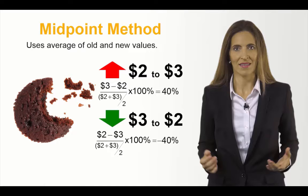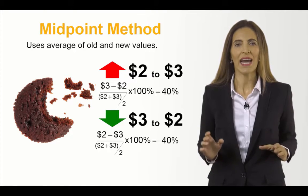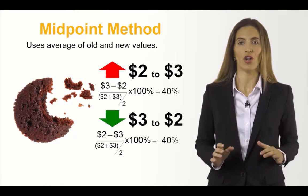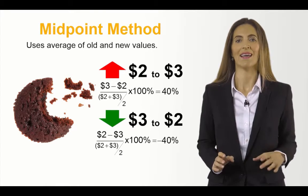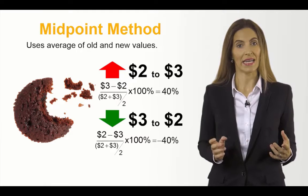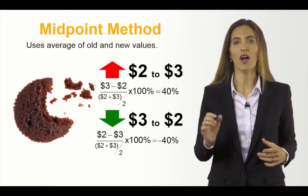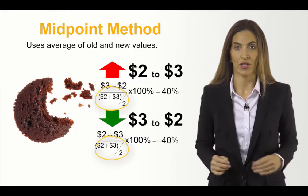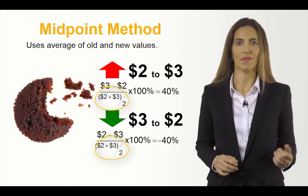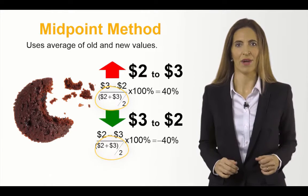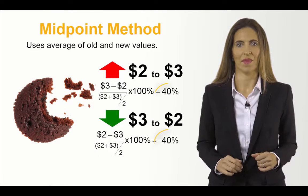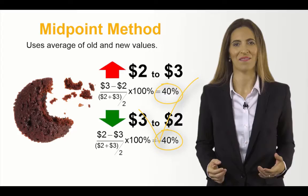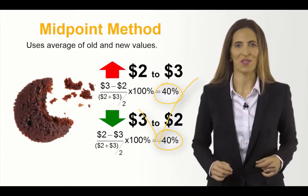In this example, we calculate the percentage variation in the price of the chocolate cake by dividing the $1 change in price by the average of the initial and the ending price. Our percentage change is now the same: 40%.